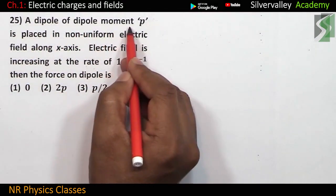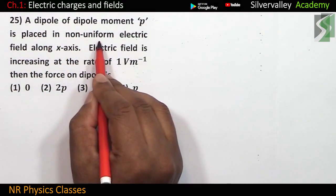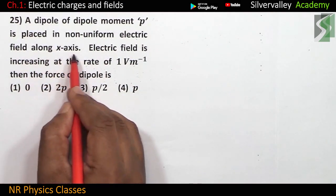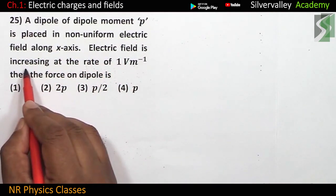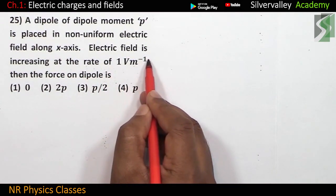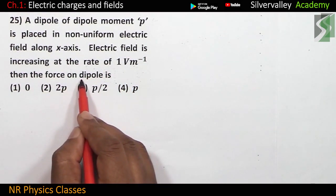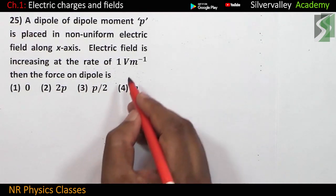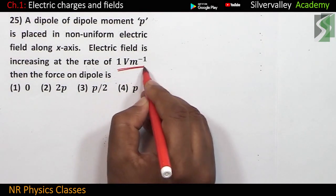A dipole of dipole moment p is placed in non-uniform electric field along x-axis. Electric field is increased. Electric field is increasing at the rate of 1 volt per meter. Then the force on dipole is. So, electric field is changing at this rate.